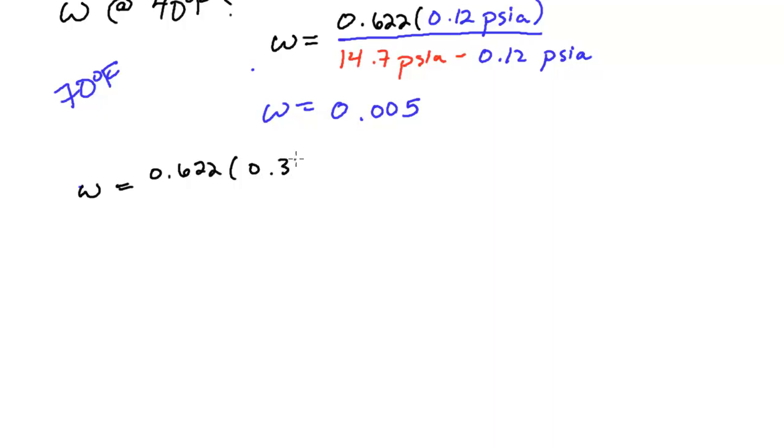is 0.622 times 0.36 psia divided by 14.7 psia minus 0.36 psia. If you do this, you get something on the order of 0.016.